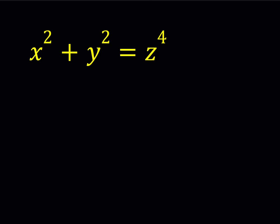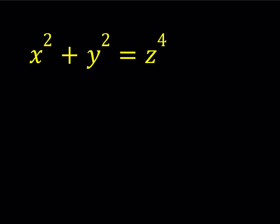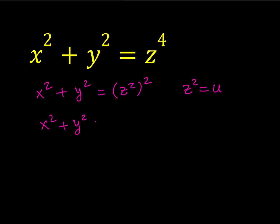Let's get started. In order to solve this equation, I'm going to turn this into a Pythagorean-type equation. First, I'm going to replace z squared with something. We can write this equation as x squared plus y squared equals z squared, squared. If I replace z squared with u, then I get the Pythagorean theorem: x squared plus y squared is equal to u squared.